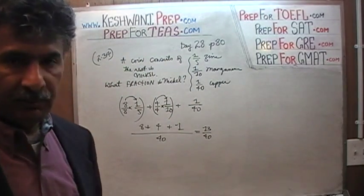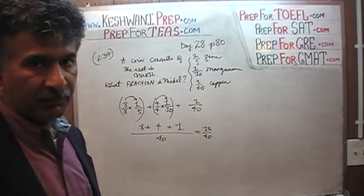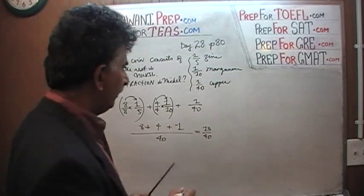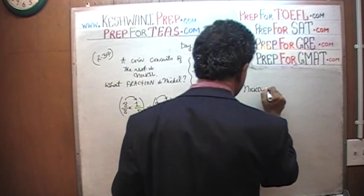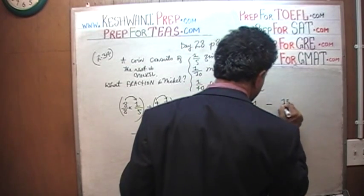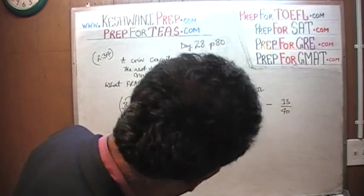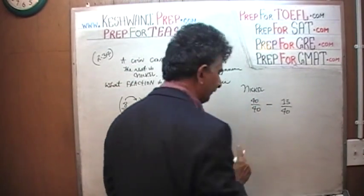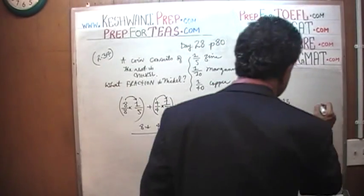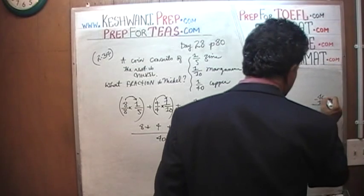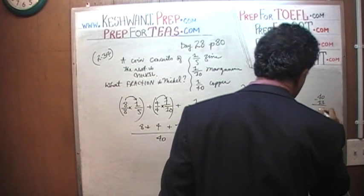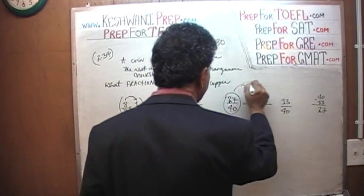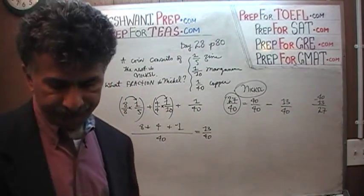We have 8 plus 4 which is 12, plus 1 which is 13 — so 13/40. That means 13/40 is what makes up the coin in the form of zinc, magnesium, and copper. Therefore the remaining portion — the nickel — must be 1 minus 13/40. And 1 expressed as 40/40 gives us 40 minus 13, which is 27. So nickel is 27/40. That's it — we are done.